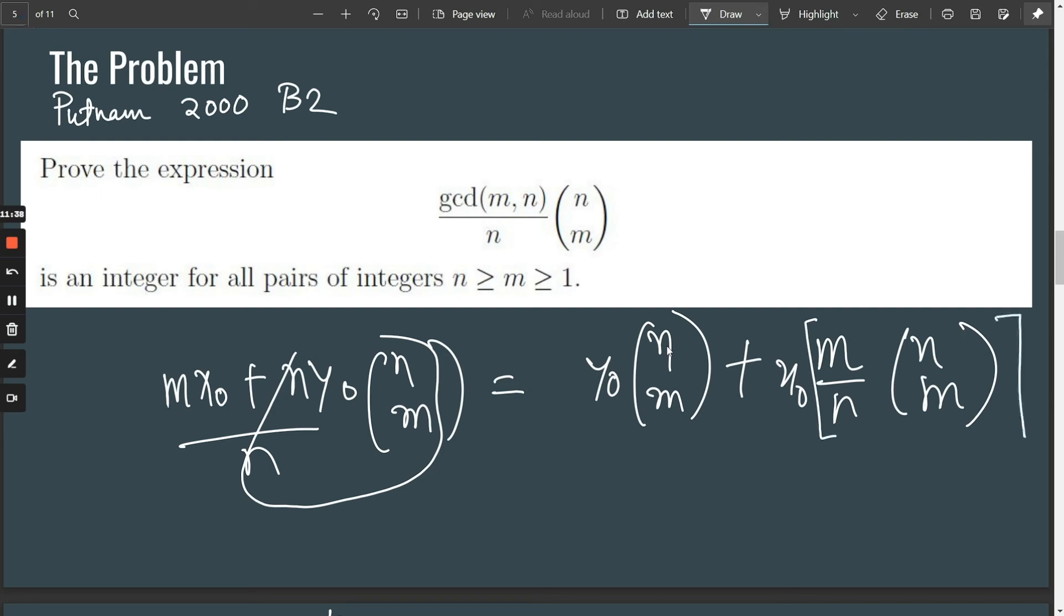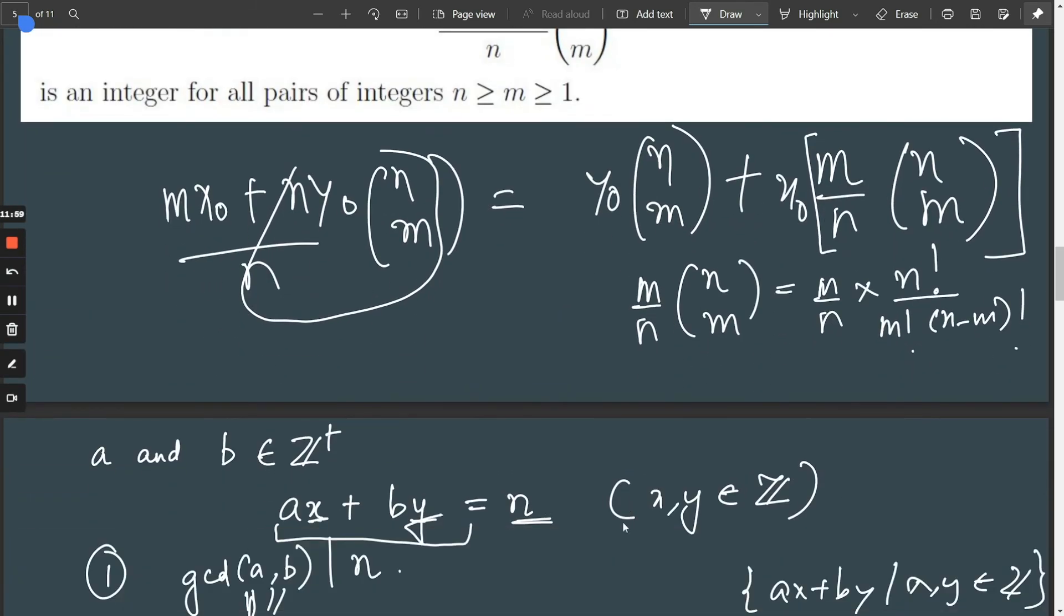So we want to show that, it would be nice if you could show that m/n times n choose m was an integer. But is this really that hard to show? Because this is just, we'll just expand it out, is n!/(m!·(n-m)!). And we could just cancel things out. We could write, this just becomes (n-1)!. This just becomes (m-1)!. And what we are left with is (n-1)!/((m-1)!·(n-m)!). This is just (n-1) choose (m-1), which is clearly an integer. So we've shown that this is an integer.